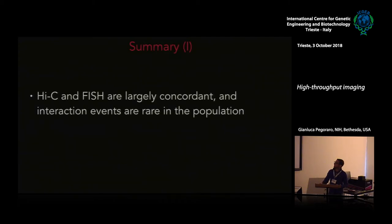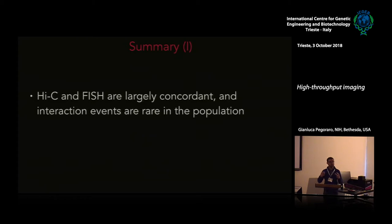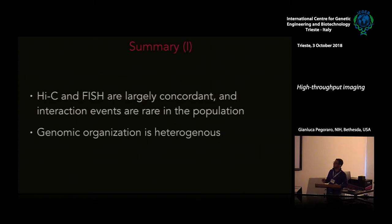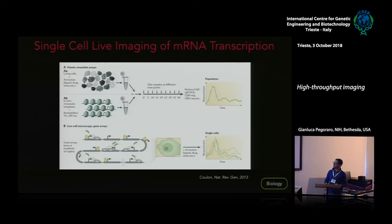To summarize the first story: Hi-C and high-throughput FISH are largely concordant, but interaction events are generally rare in the population, so what we see with Hi-C represents an average of many different conformations. Some more recent published work supports this view that different cells in a population have different genomic structures, and that genomic organization is heterogeneous.